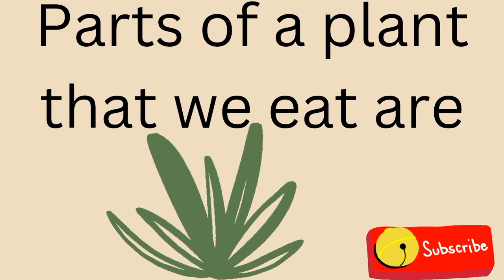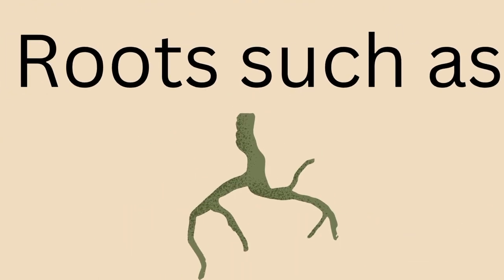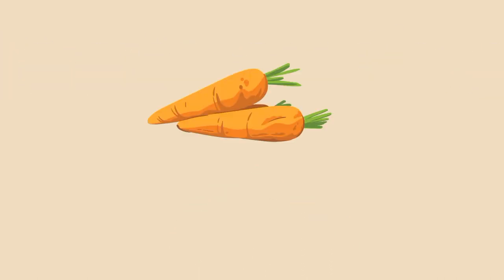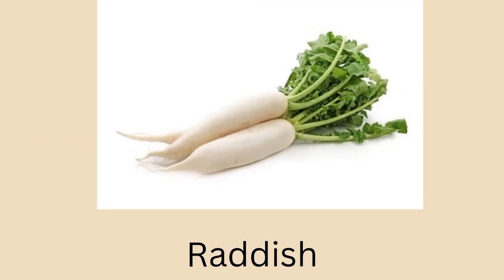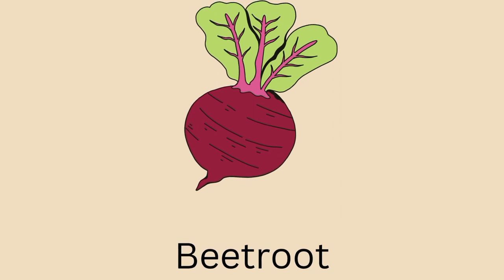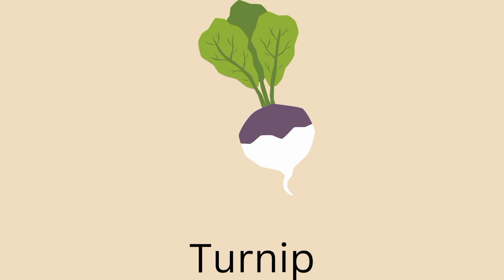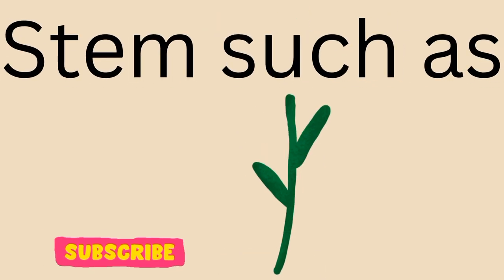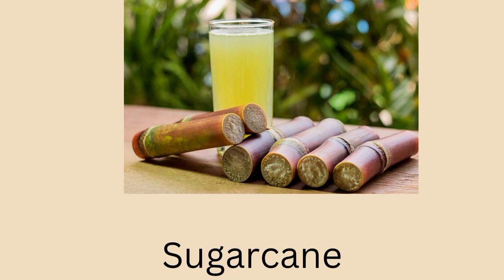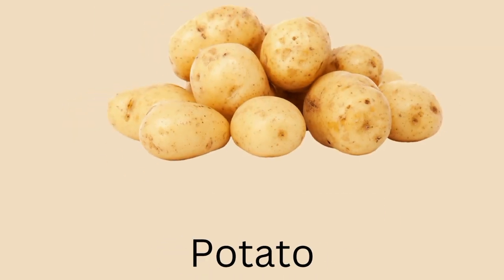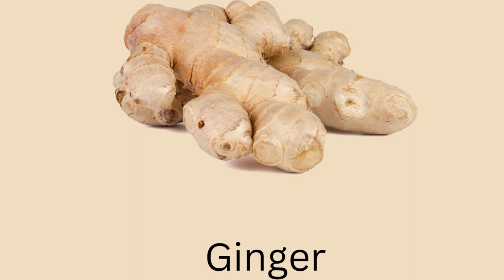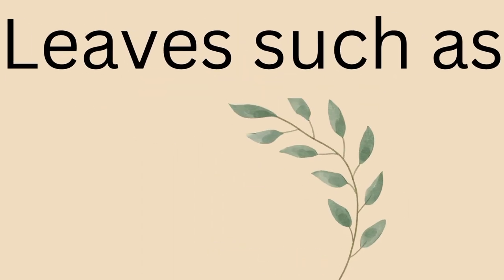Parts of plants that we eat: roots such as carrot, radish, wheat root, and turnip. Stems such as sugar cane, asparagus, potato, and ginger.